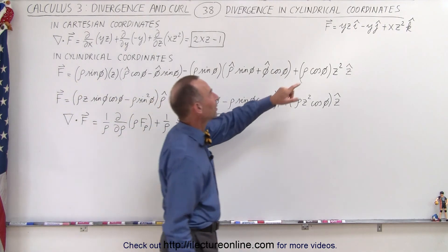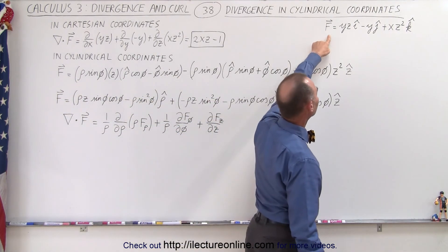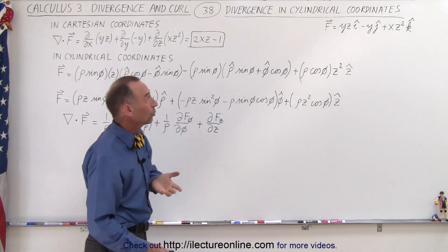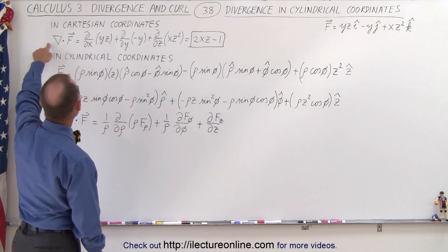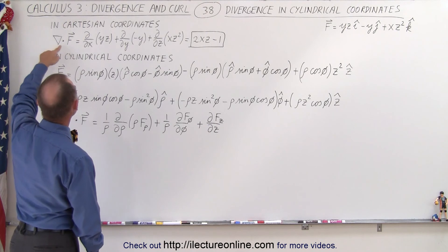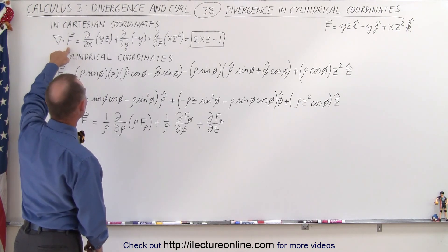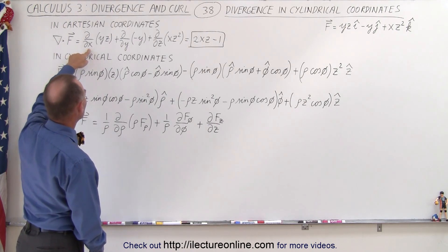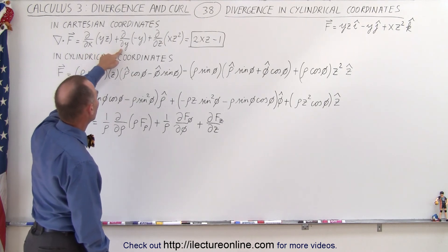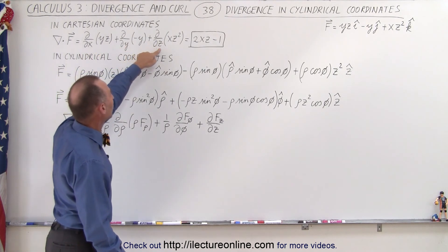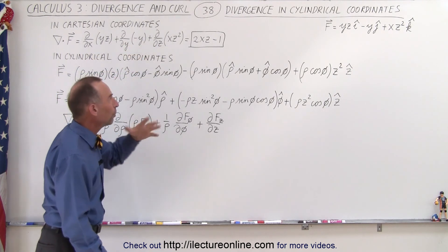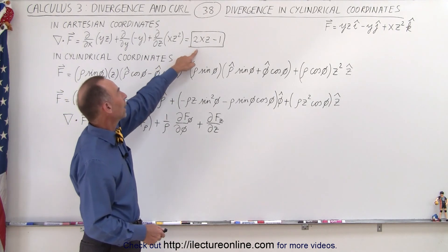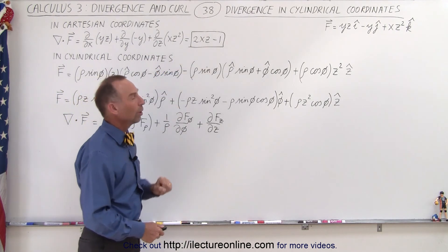Here we have the vector field expressed in terms of i, j, and k. In Cartesian coordinates it's rather easy to take the divergence of that vector field — we simply take the partial derivative with respect to x, with respect to y, and with respect to z of the x, y, and z components of the vector field, and the result is 2xz minus 1.